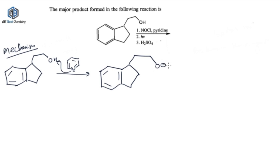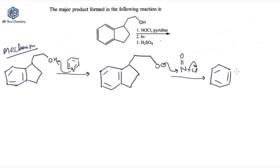So you will get a negative charge on this oxygen. Now in the next step you have NOCL, and this O⁻ will do nucleophilic addition — it will attack on this nitrogen, and chlorine will be liberated out of the reaction, and you will get O-NO. So the first step of the reaction gives you up to this intermediate.